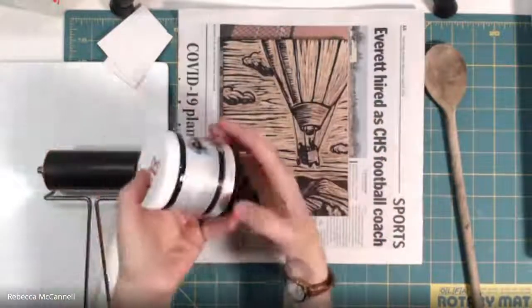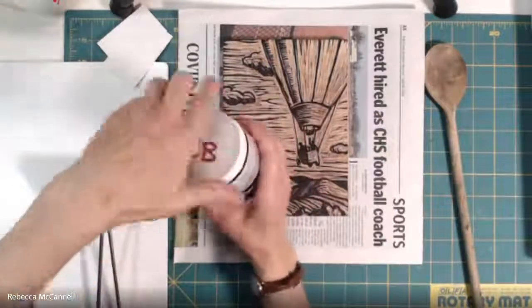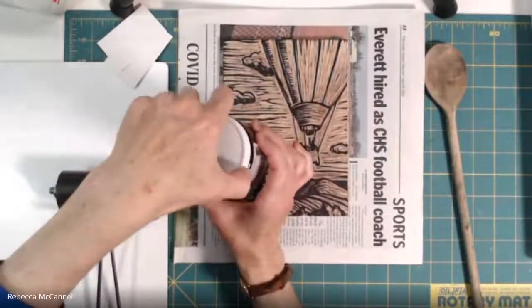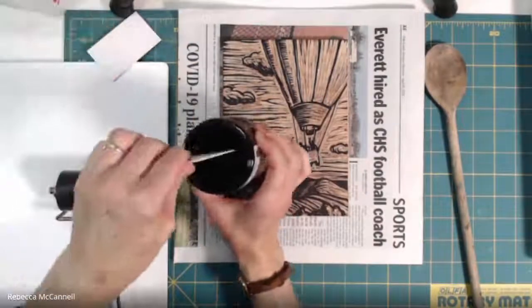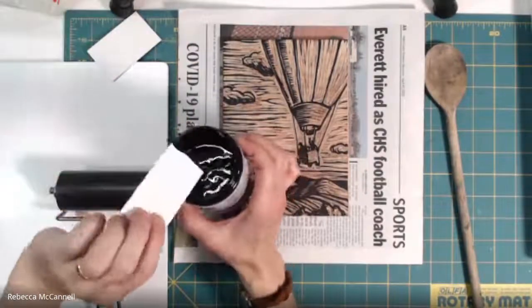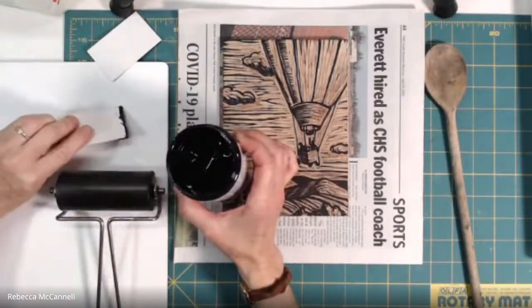We'll be using Akua printmaking inks for this project. You can also use tube inks that are oil-based or water-based, it really doesn't matter too much, but the goal is to have ink that has a little bit of a stiff body to it. If it's too runny, the ink will get down into the low parts of your plate and you'll lose some of the details.